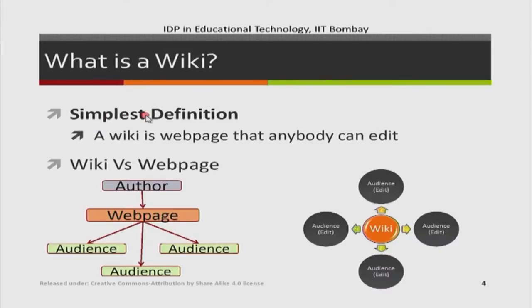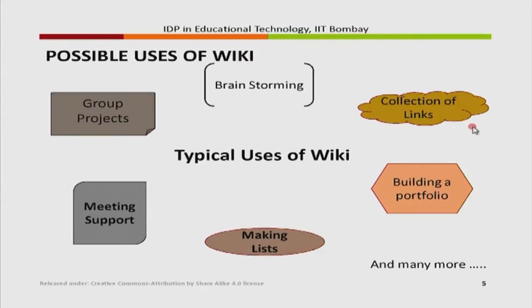Let us first look at what a wiki is. In its simplest definition, a wiki is a web page that anybody can edit. The difference between a normal web page and a wiki page is that any participant of the wiki will be able to edit it, whereas in a normal web page only the author can edit it and readers can only view it. Some possible uses of wiki in the academic field are brainstorming, collection of links, building a portfolio, making lists, supporting meetings, and group projects.